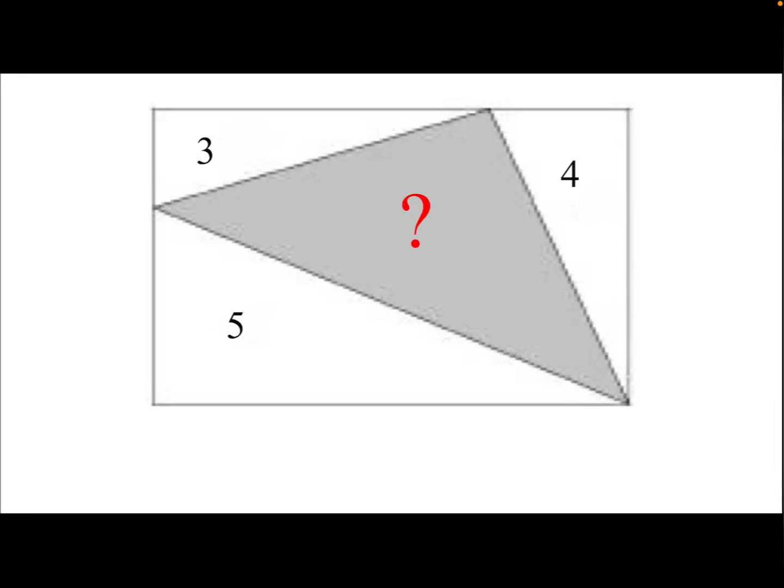Let's take a look at this problem. We have a rectangle divided into four regions. Three of the regions have areas 3, 4, and 5 respectively. Find the area of the fourth region.